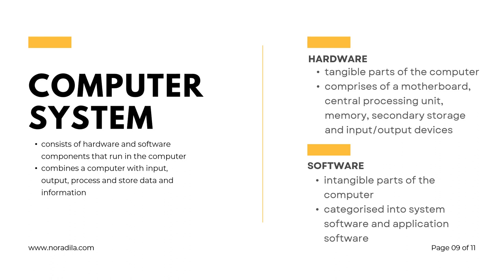As we have known, a computer is an electronic device that stores and processes data. A computer system is different from a computer in that a computer system consists of hardware and software components that run in the computer. It combines a computer with a set of integrated devices that input, output, process, and store data and information used to perform a complex set of functions.